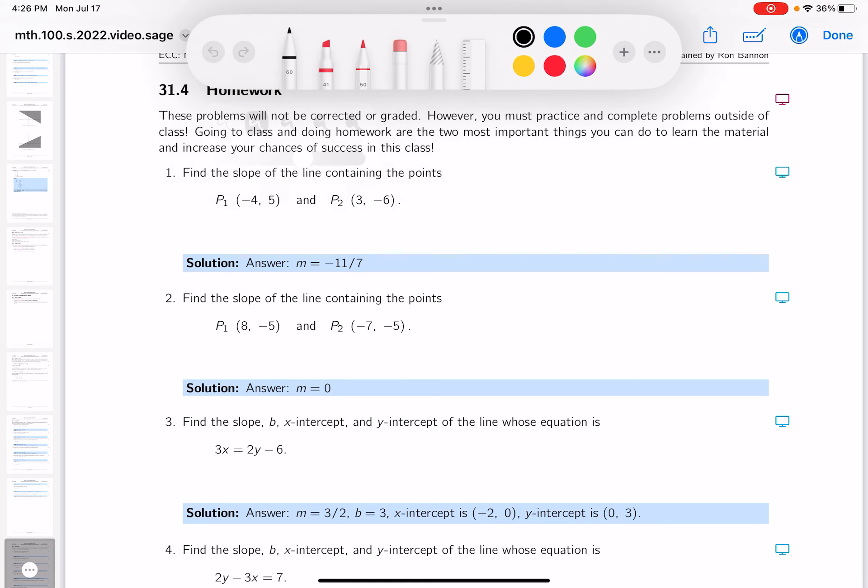Okay, we're in homework 31.4. First question, find the slope of the line containing those two points.